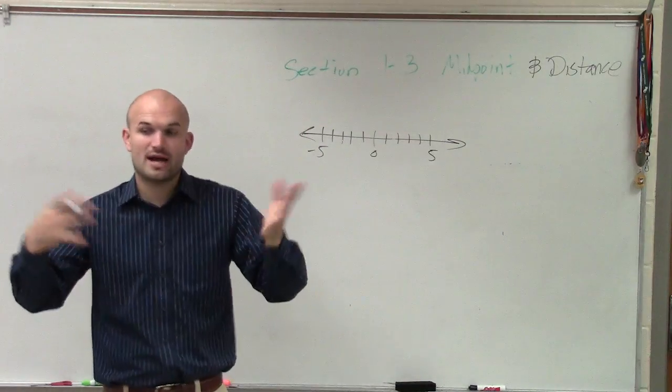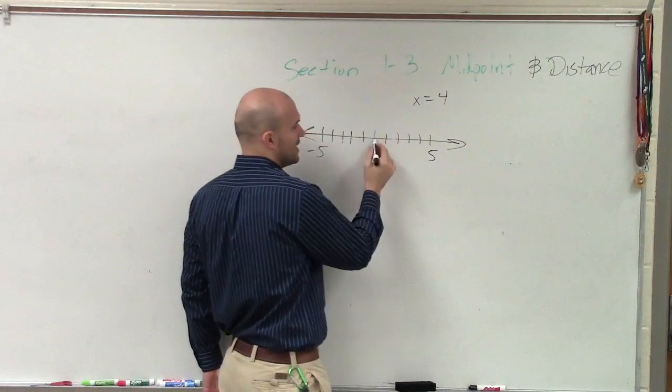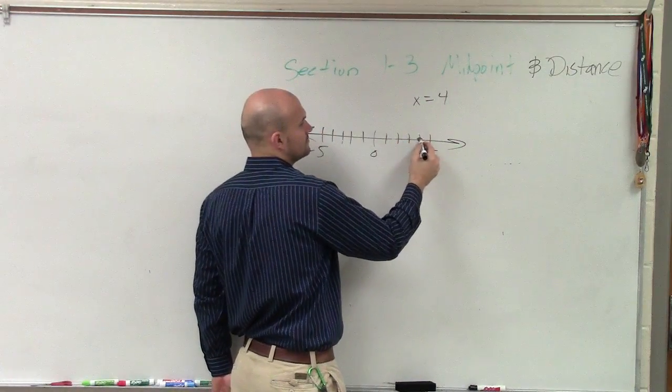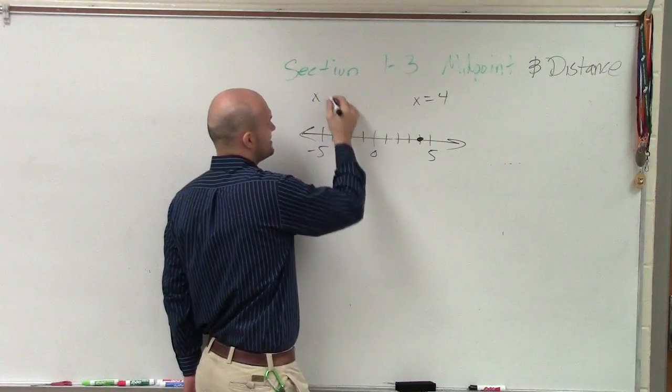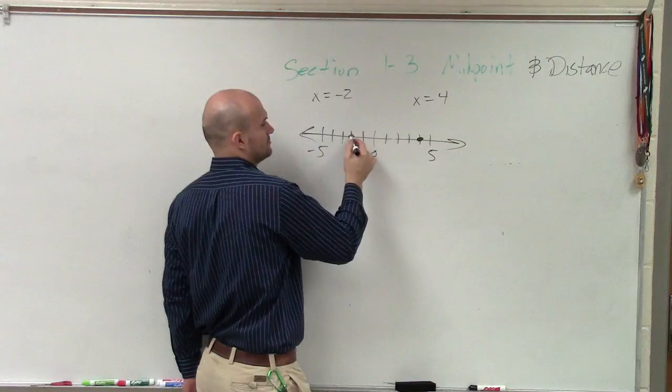Then, the next thing we did is we learned how to plot points. If I said, what about when x equals four? You'd say, okay, well from zero I go over four, one, two, three, four. And then I say, x equals negative two. And you go, oh, to the left, two. Right?